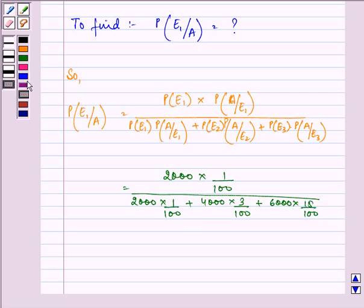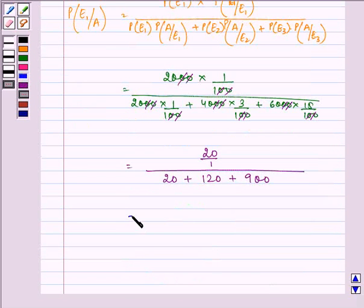On simplifying, we have 20 divided by 20 plus 120 plus 900, which further gives us 20 upon 1040. On simplifying it further, we have the answer as 1 upon 52.